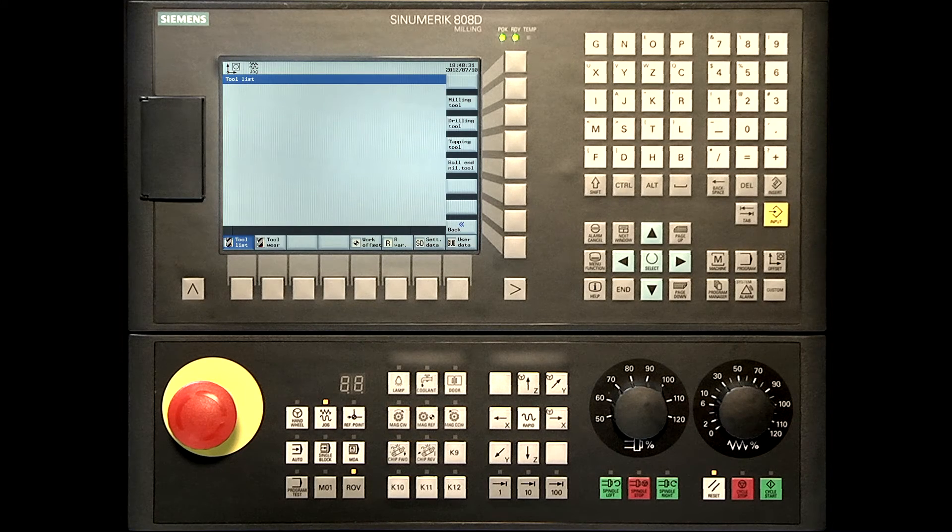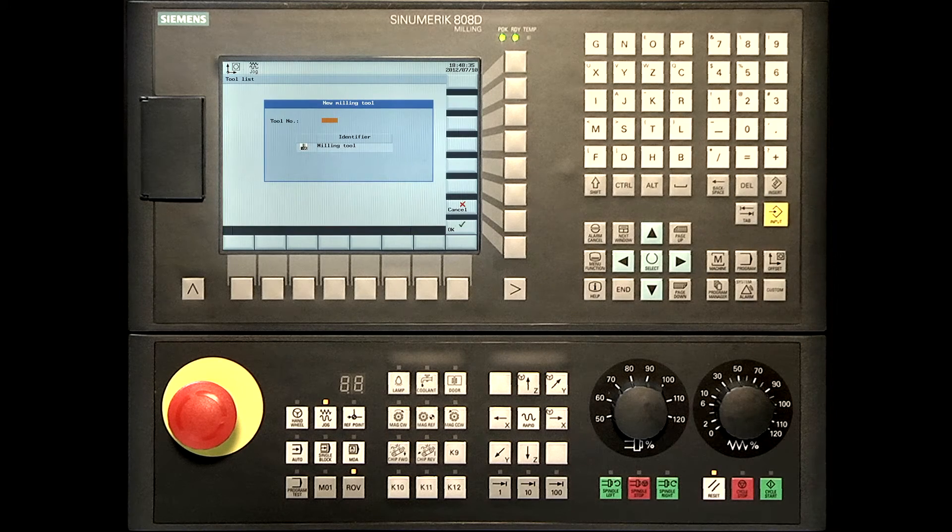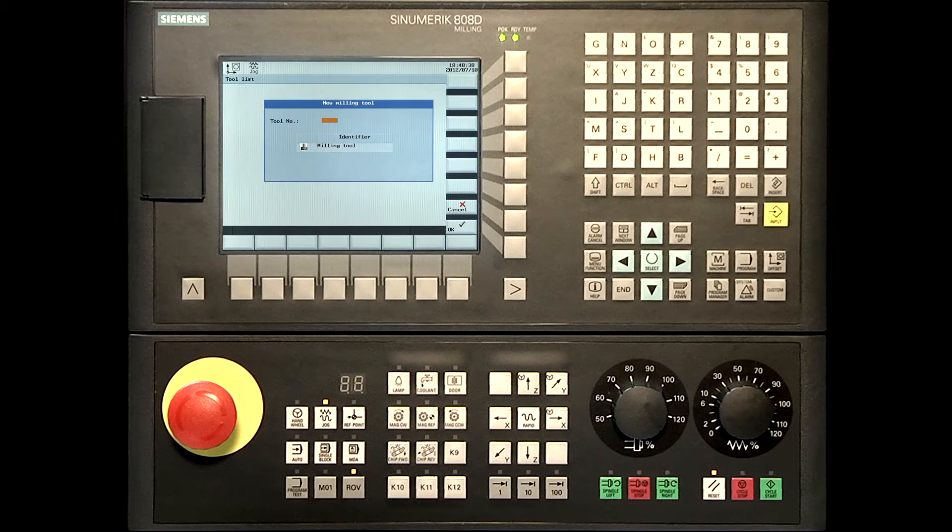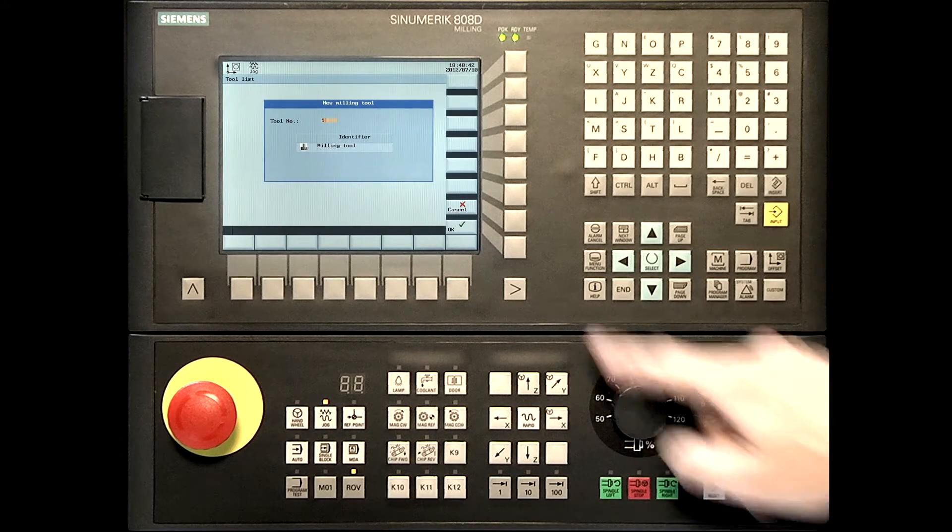In our case we want to use the milling tool. Type in the individual tool number, for example 1, and confirm by pressing the OK soft key.